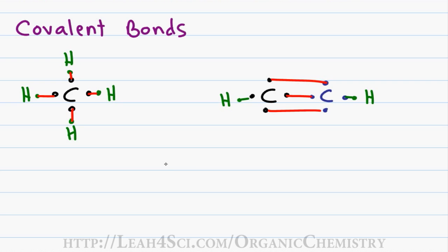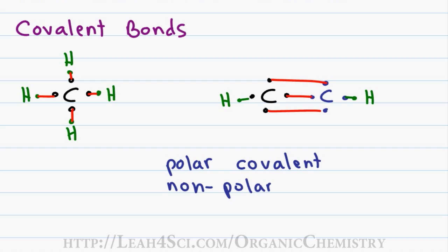Within covalent bonding, we have two types, polar covalent and nonpolar covalent. In general chemistry, you learn how to take the difference in electronegativities to determine when the bond is polar and when it's nonpolar. In organic chemistry, once again, you have to understand the nature of these bonds simply by knowing the atoms involved and where they show up on the periodic table. We'll start with nonpolar because it's simpler.